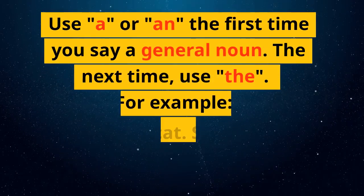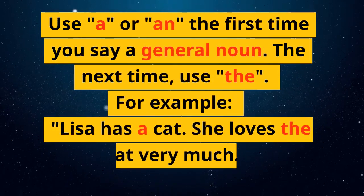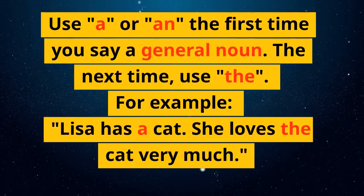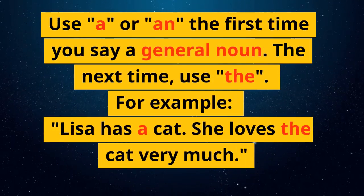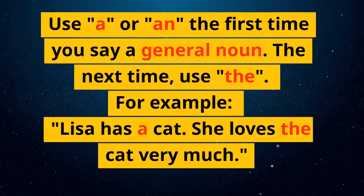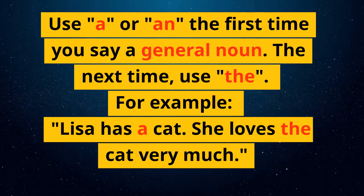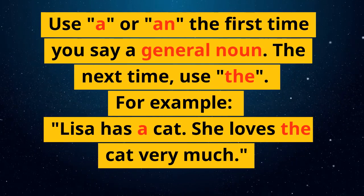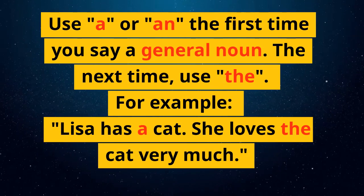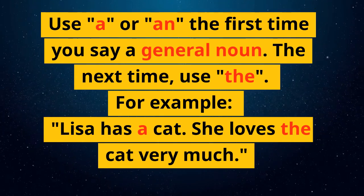Use 'a' or 'an' the first time you say a general noun. The next time, use 'the.' For example, 'Lisa has a cat. She loves the cat very much.'